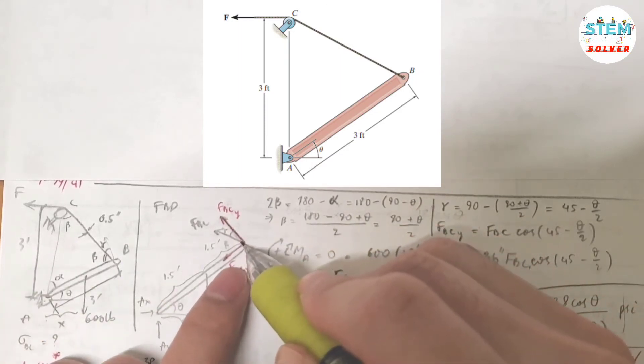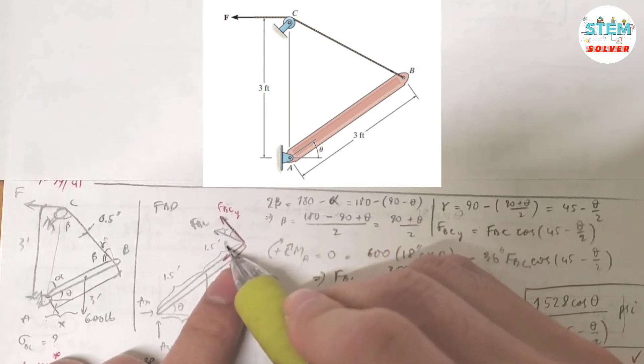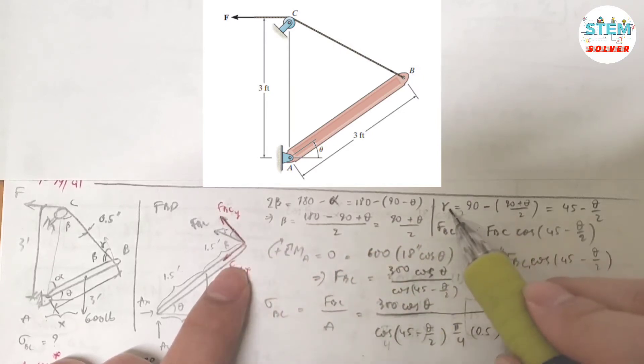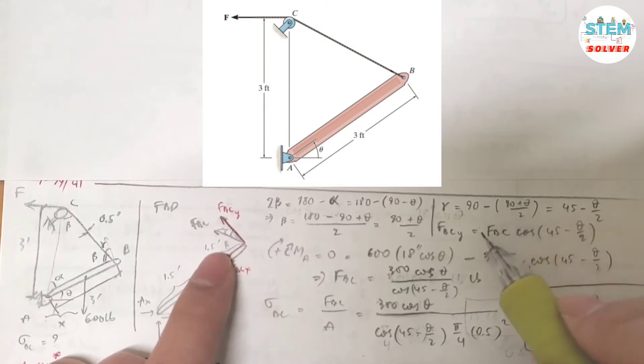And again, this angle is the right angle. So beta plus gamma is equal to 90. So gamma is equal to 90 subtract beta. And beta is equal to 90 plus theta divided by 2.